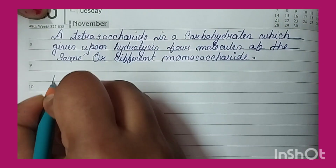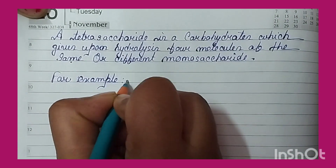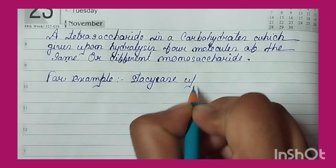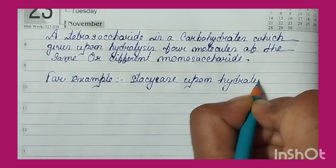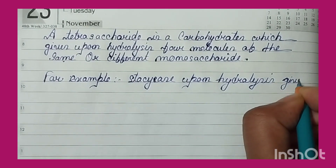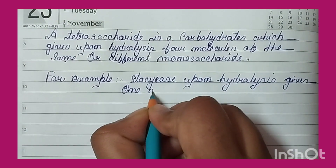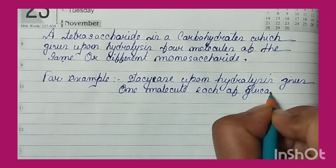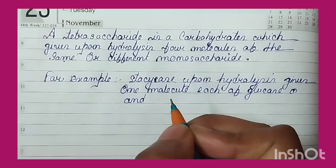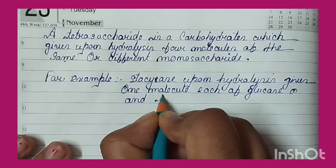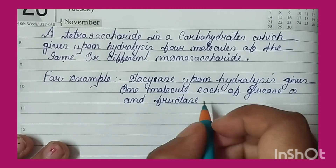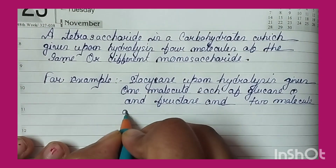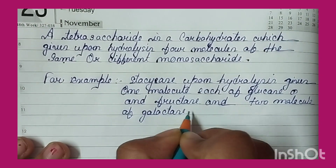An example of tetrasaccharide is stachyose. Stachyose, upon hydrolysis, gives one molecule each of glucose and fructose, and two molecules of galactose. So the four molecules that make up stachyose are glucose, fructose, and two molecules of galactose. This structure is very easy.